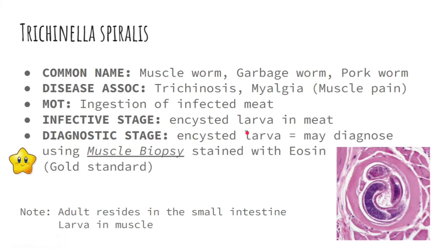The diagnostic stage of this parasite is also the encysted larvae, found in the muscles or meat. This encysted larva can be diagnosed through muscle biopsy stained with eosin. Eosin is a type of stain — an orange-colored stain. If you are suspected of being infected with Trichinella spiralis, a muscle tissue sample will be taken, stained with eosin, and then examined under the microscope to check for the presence of encysted larvae.